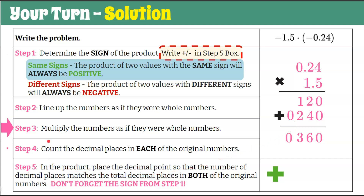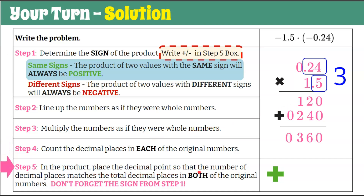Step four: count decimal places in each original — two plus one is three decimal places. Step five: place the decimal point three digits in — one, two, three — put our decimal point. You can keep the trailing zero but you don't need it. And of course we don't need a positive sign if it's a positive answer. So 36 hundredths — you could have the zero here, it doesn't change the value.